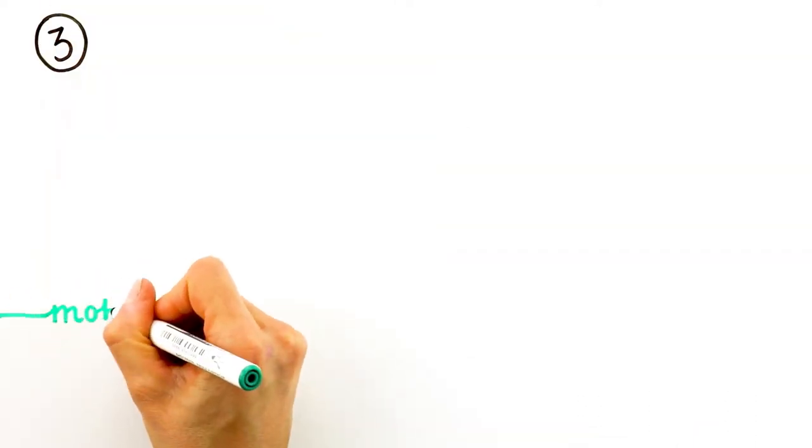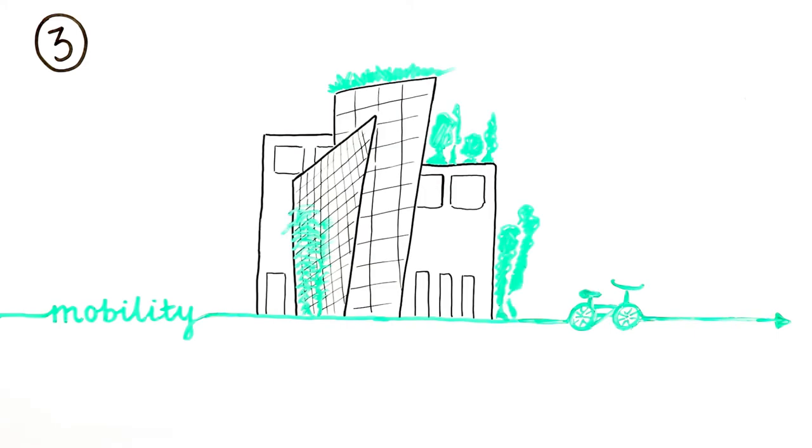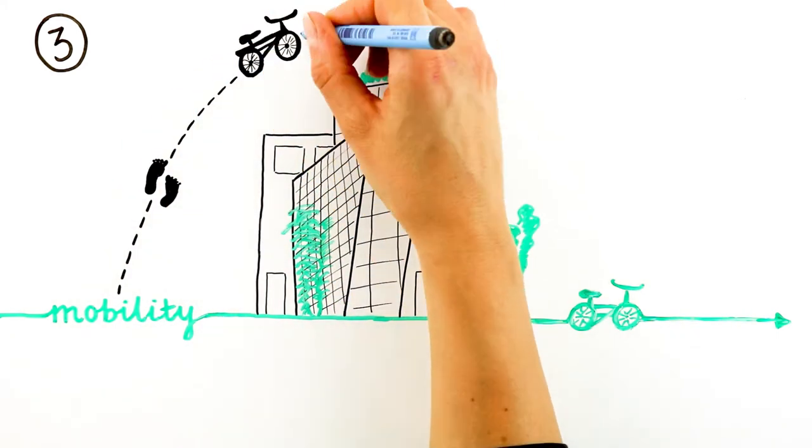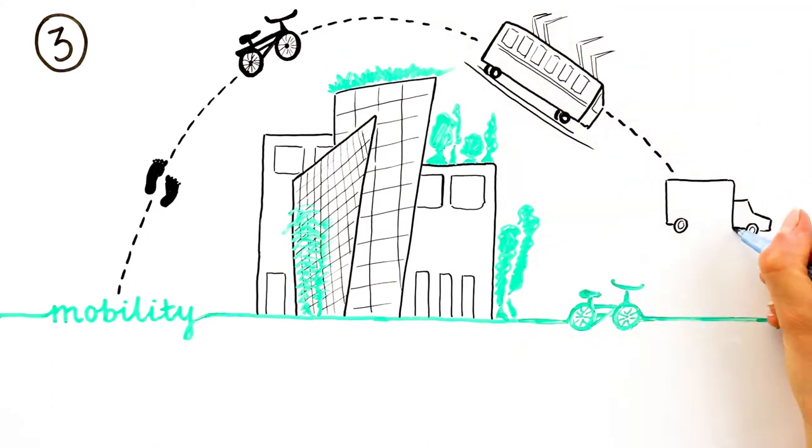The third most critical carbon contributor is mobility. All projects should encourage walking, cycling and public transport as first choices of transportation, and provide easy access to shared and low emission vehicles.